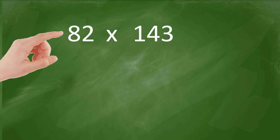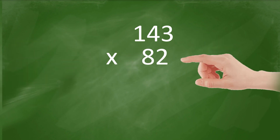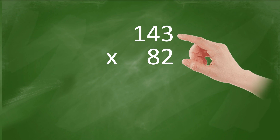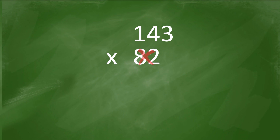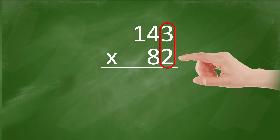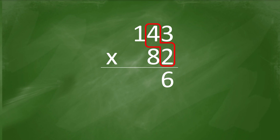When you have a problem written like this, rewrite it in column form. Always put the number with the most digits on top. Make sure the two given numbers align to the right — not here, not here; it should align from here. Let's begin multiplying. 2 times 3 equals 6. 2 times 4 equals 8. 2 times 1 equals 2.